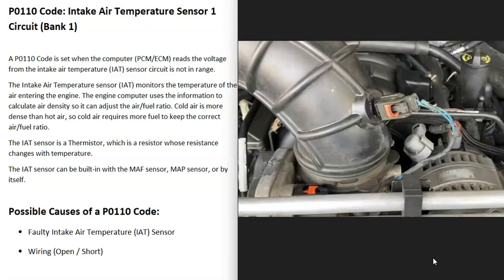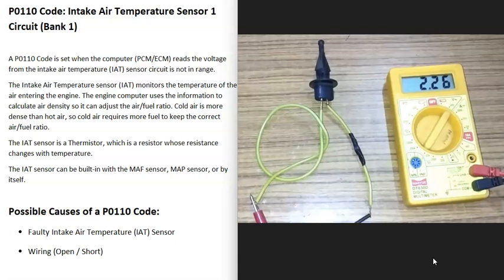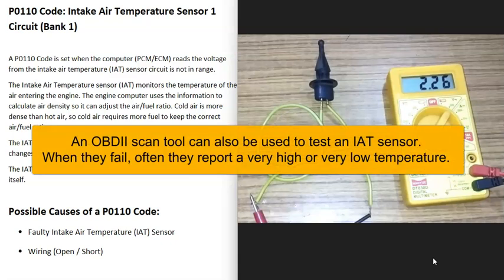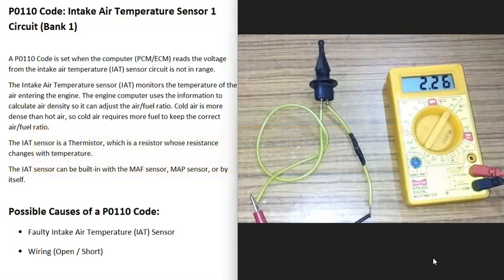You can test these sensors if you want to. If you have a multimeter, what you do is you set it to ohms so that you can read resistance. And then you apply heat to it with like a hot hairdryer or something like that. Because these intake air temperature sensors are what's called a thermistor, which is basically a resistor whose resistance changes with the temperature. So you can test it if you want to. There's some good YouTube videos on how to go about testing these.